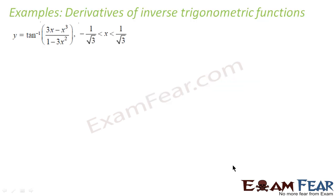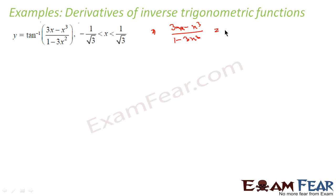I will try to solve using the implicit function. So y is equal to tan inverse of this. I can write the same thing as (3x minus x cubed) divided by (1 minus 3x squared). The whole thing is nothing but tan y. I can write this, and I can use the implicit function now to solve it.